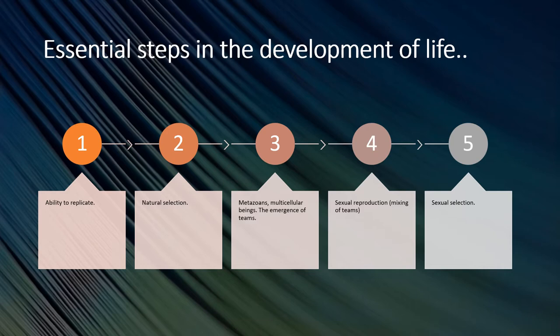Stage two: natural selection weeds out the unfit and selects the best mutations. Life remains for a very long time at the level of single-cell organisms — things that can only copy themselves, as singular units. We are talking about the first billion years of life on Earth. The third stage is the emergence of metazoans — multicellular organisms. This is the originating of teams. Think back to our video on cooperation.